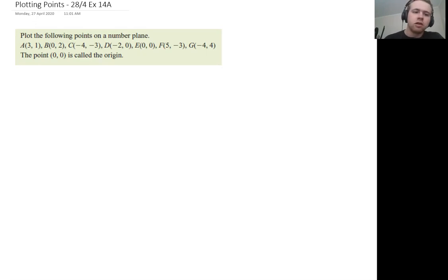Okay, so if you look at this example here, it says plot the following points on a number plane. We've got all these letters that have these numbers in brackets next to them, and also the point (0,0) is called the origin. So what is a number plane?